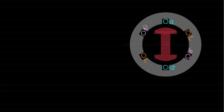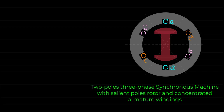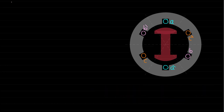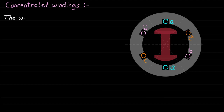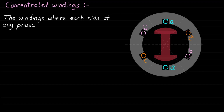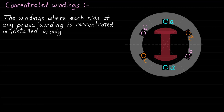This figure shows a two-pole three-phase synchronous machine with salient pole rotor and concentrated armature windings. As mentioned in the previous lecture, the concentrated armature windings can be defined as the windings where each side of any phase winding is concentrated or installed in only one slot.